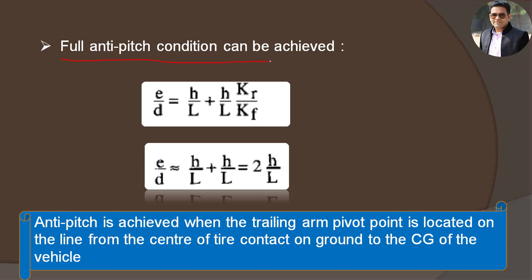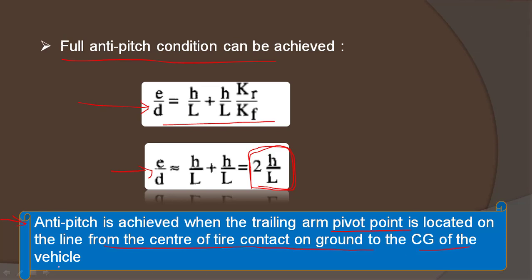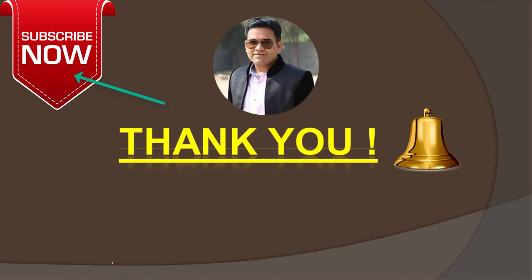For the full anti-pitch condition, to achieve zero pitch angle, the E/D ratio must equal H/L plus (H/L)·(Kr/KF). This gives us zero spring deflection at the rear side for the considered geometry. If such a case applies, we can consider approximately E/D ≈ 2·(H/L). Anti-pitch is achieved when the trailing arm pivot point is located on the line from the center of the tire contact on the ground to the CG. Thank you for watching my video.